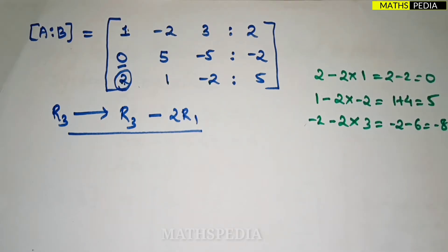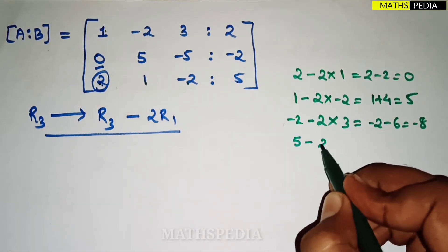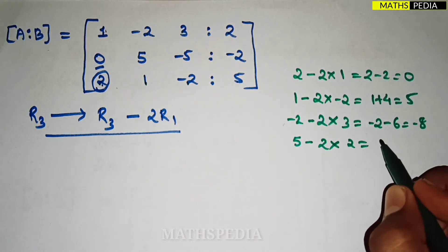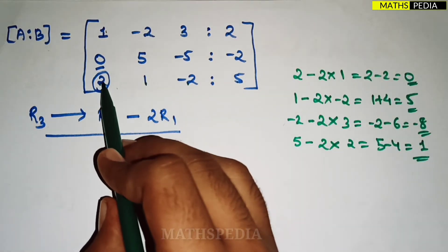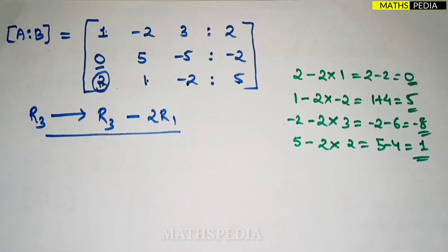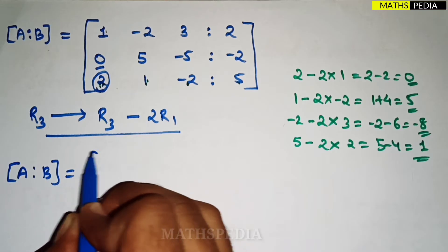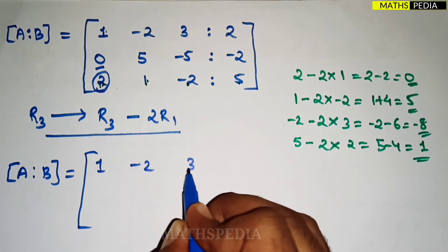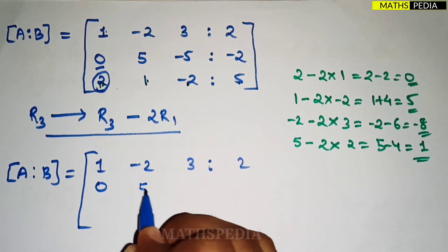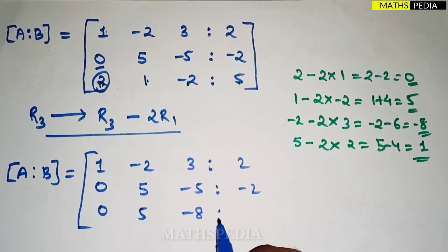Completing R3 = R3 − 2R1: the constant term is 5 minus 2×2 = 5 − 4 = 1. So we have obtained all elements of the new row 3: 0, 5, minus 8, and 1. The augmented matrix is now updated: R1 unchanged, R2 unchanged, and R3 becomes 0, 5, minus 8, 1.